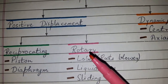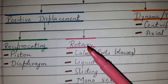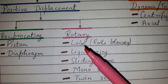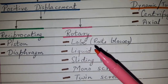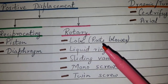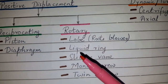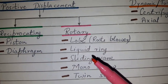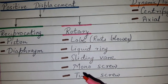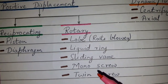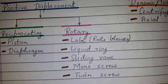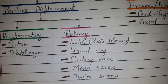Rotary compressors can be further classified as lobe — also known as roots blower — liquid ring, sliding vane, mono screw, and twin screw compressors.